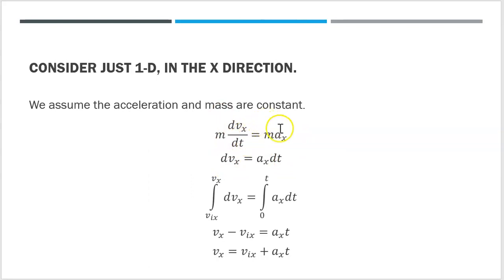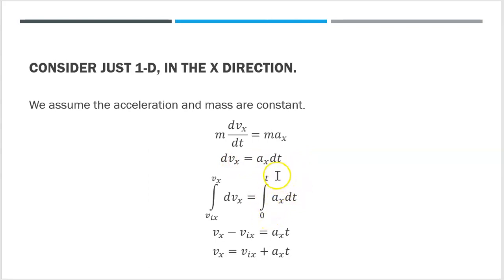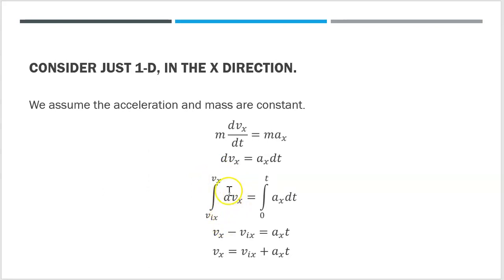Now I'm going to multiply both sides of that equation by dt, which gives me dvx equals ax times dt. I have a form I can integrate. I'm going to assume my time runs from 0 to t, starting the clock at t equals 0. At that time, the velocity can start at some initial velocity vix in the x direction, and I integrate up to some later velocity vx. So I have the integral from vix to vx of dvx equals the integral from 0 to t of ax dt.